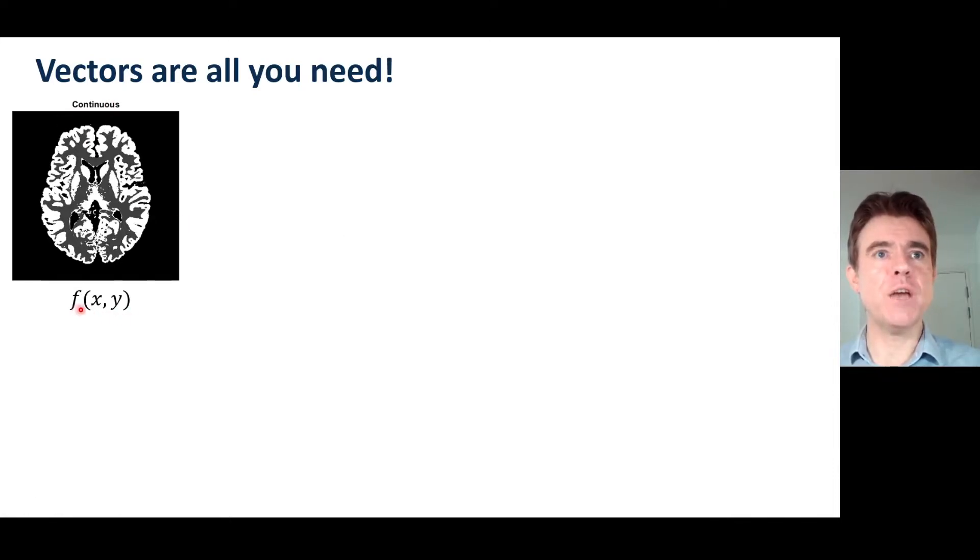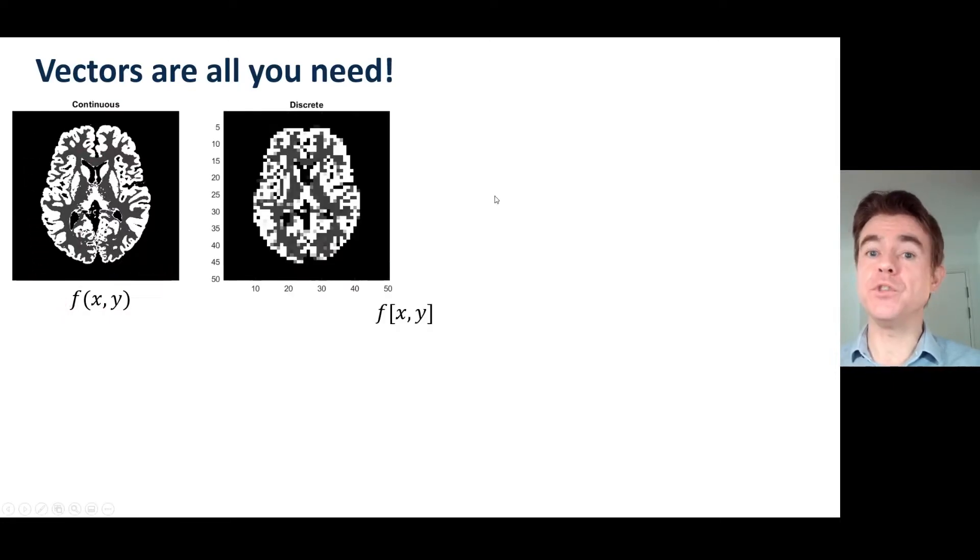And so this is a continuous function f of x,y where we've got some value f varying with position x and position y. What we can do is discretize that function and now we're just going to use 50 discrete positions in x, 50 discrete positions in y.